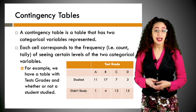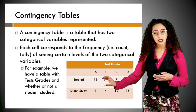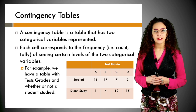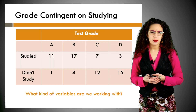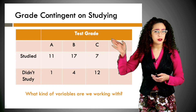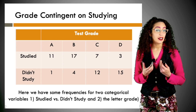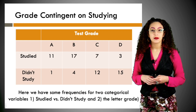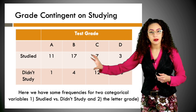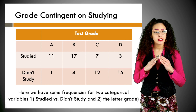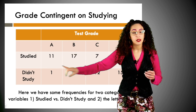Now let's look at contingency tables. A contingency table is a table that has two categorical variables represented, and each cell has a frequency — the count or tally of seeing certain levels of two categorical variables. In our example, we have test grades A through D and whether students studied or didn't study — both categorical variables. The numbers represent how many people satisfy both conditions, so 11 people studied and got an A, and one person didn't study and got an A.